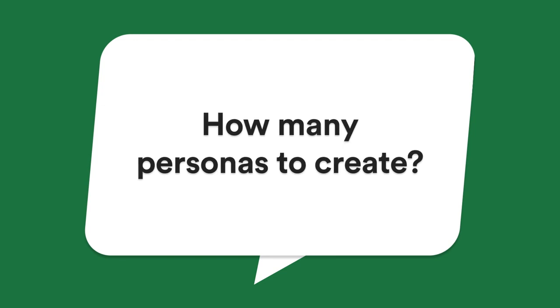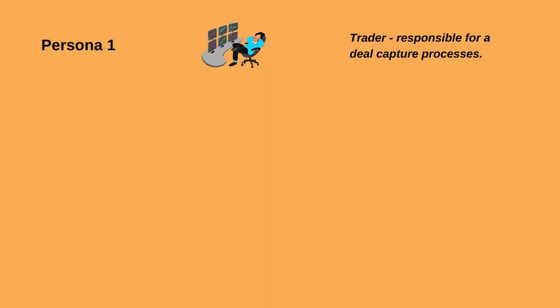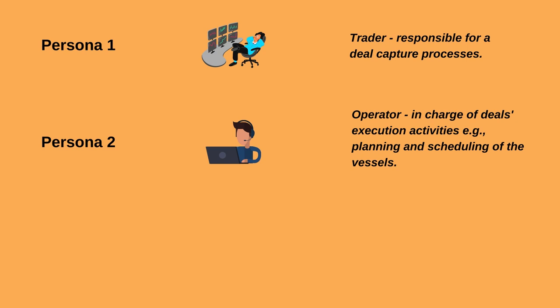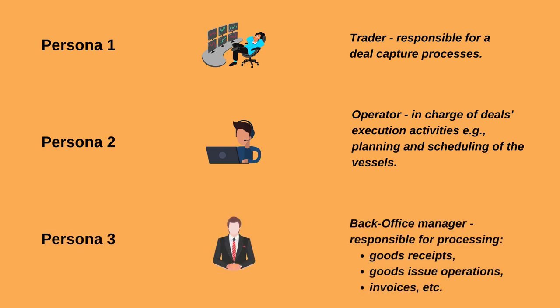The final question is, how many personas to create? Of course, the answer depends on your product and industry. Every product will likely have several personas to cover parts of product functionality. For example, when I was developing a trading platform, we had three primary personas: Trader, responsible for deal capture processes; Operator, who was in charge of deal execution activities like planning and scheduling vessels to transport cargo from seller to buyer; and a Back Office Manager, whose main responsibilities were to process goods receipts, goods issue operations, invoices, and other documents.